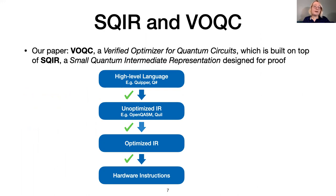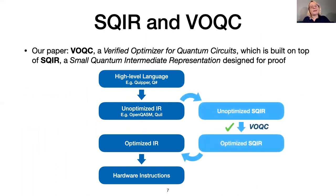In our paper, we present VOQC, a verified optimizer for quantum circuits, which optimizes programs written in SQUIRE, a small quantum intermediate representation designed for proof. We support translation between OpenQASM and SQUIRE, allowing VOQC to fit into existing unverified tool chains, like IBM's quantum software stack.